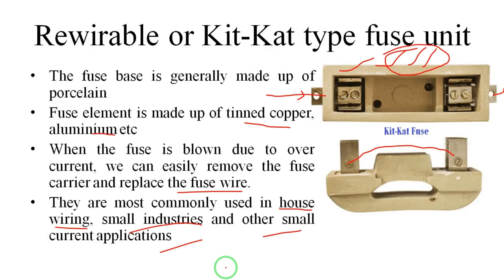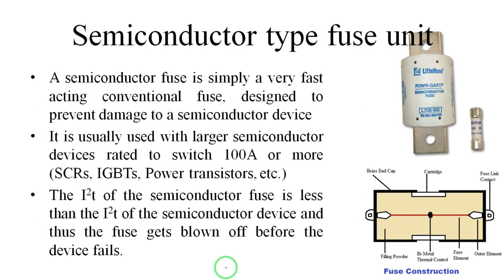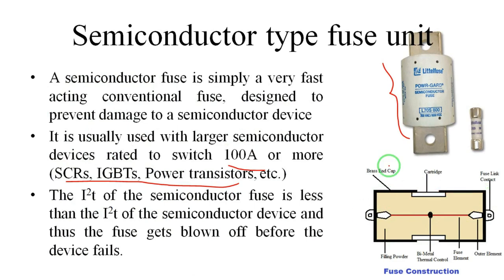The fourth type is the semiconductor type fuse. These fuses are used to protect semiconductor devices such as SCRs, IGBTs, and transistors. To protect these devices from high current, we use this semiconductor type fuse. The current capacity is 100 amperes. This fuse is similar to the HRC type fuse — it has a metal body, filling powder, a fuse element, and two caps.